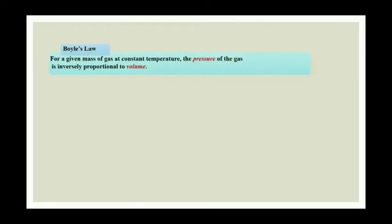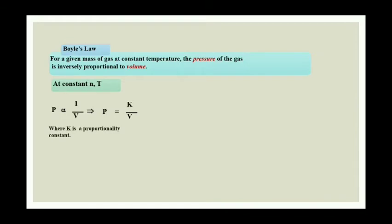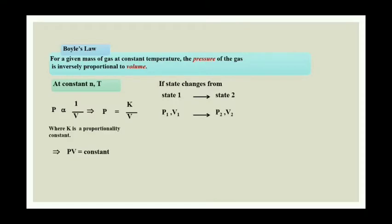Now we will start with Boyle's law. For a given mass of a gas at constant temperature, the pressure of gas is inversely proportional to volume. This law is valid only for constant N and temperature. Removing the proportionality sign, we put a proportionality constant K, so PV is equal to a constant. If a state changes from state 1 to state 2 at constant temperature, we can write P1V1 is equal to P2V2. This is the important equation of Boyle's law.